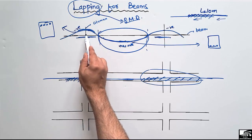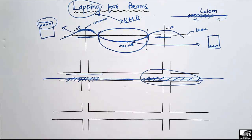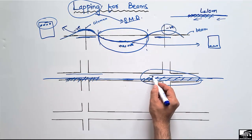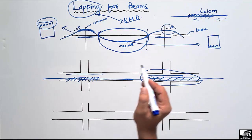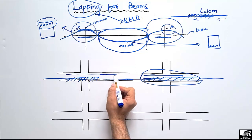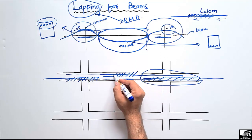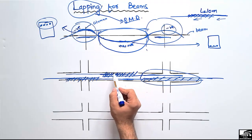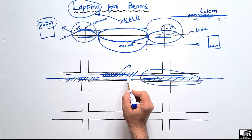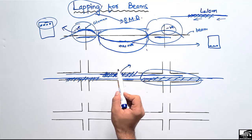Similarly, the negative bending moment is maximum at the column-beam section, so those are also critical sections. We will not provide lapping at those two portions of the beam. In the middle region of the top section, we can provide lapping of the bar. Lapping is allowed only in the region where we don't have maximum bending moment — this is the lapping zone for the top reinforcement.